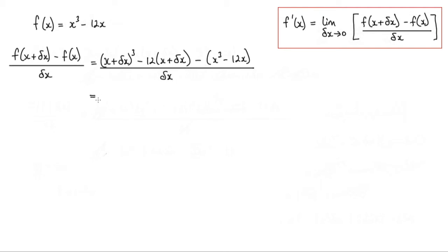So the next thing to do here is to expand some brackets. So the x plus delta x cubed, that would give me x cubed plus 3x squared delta x plus 3x delta x squared plus delta x cubed.